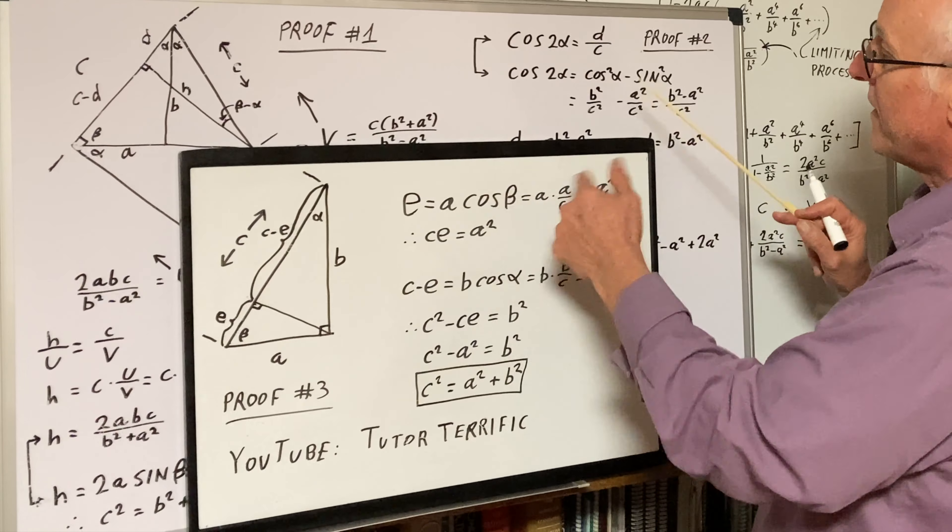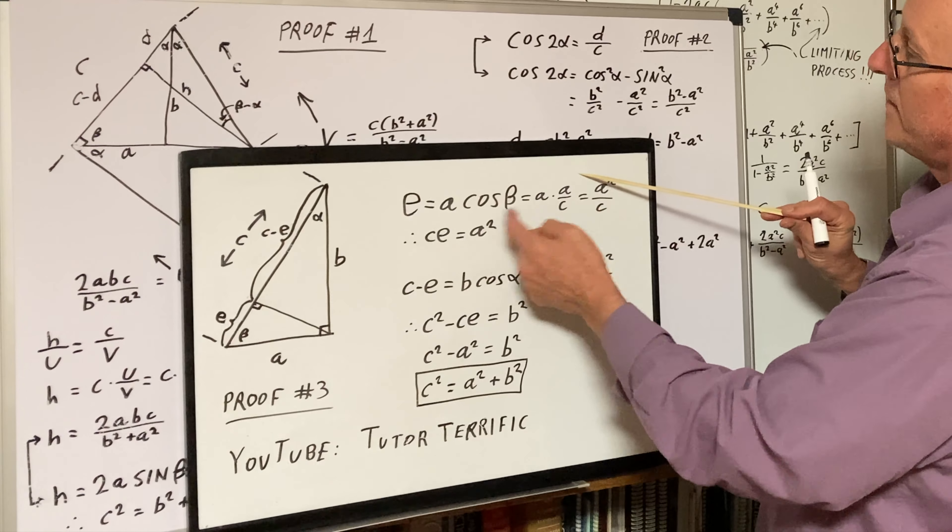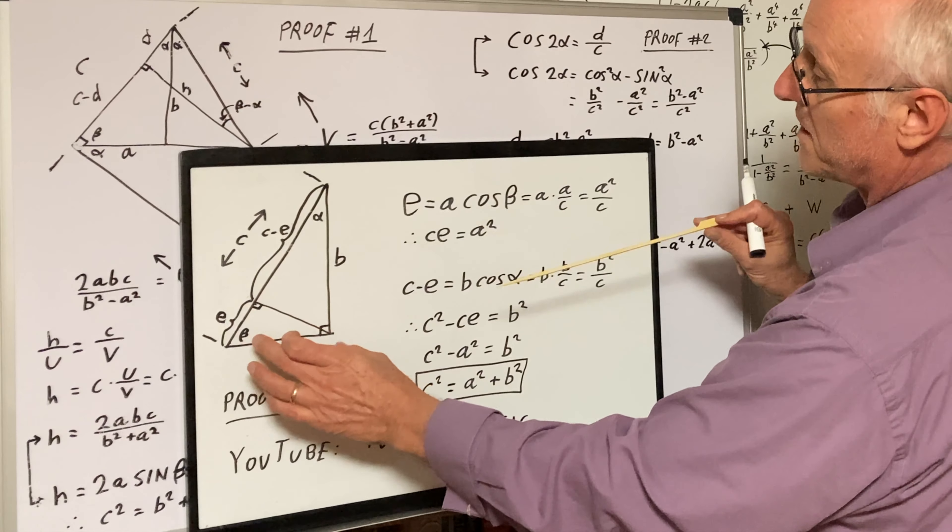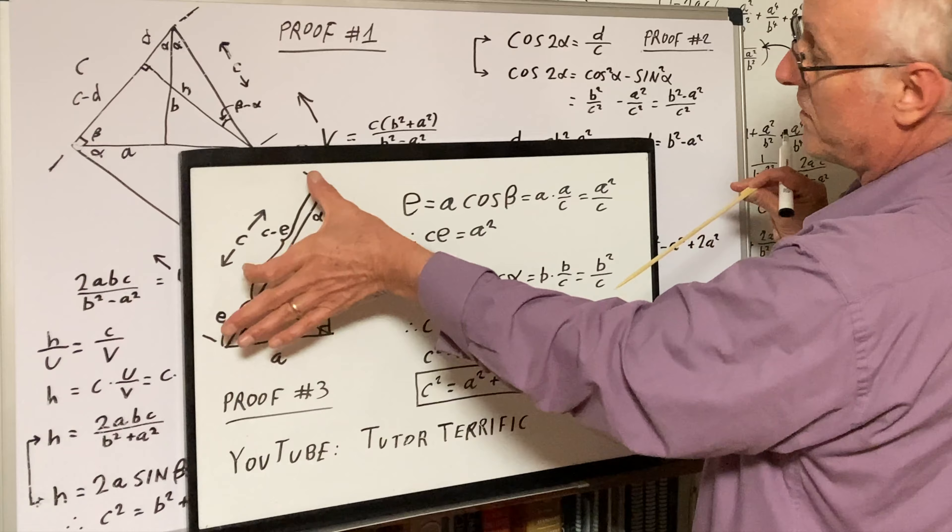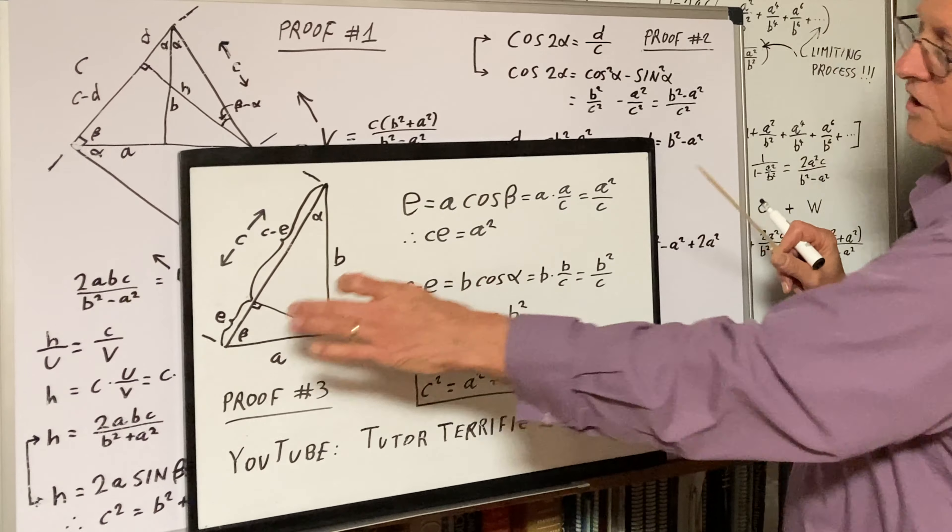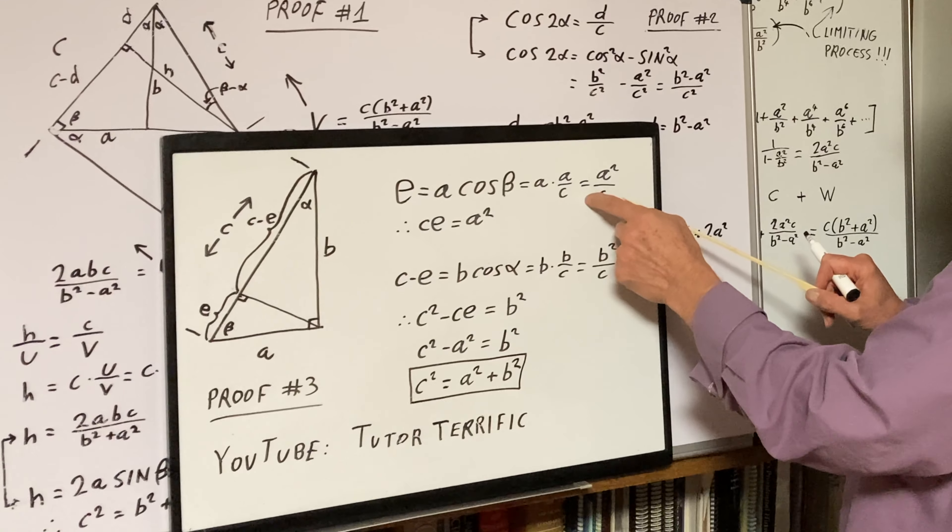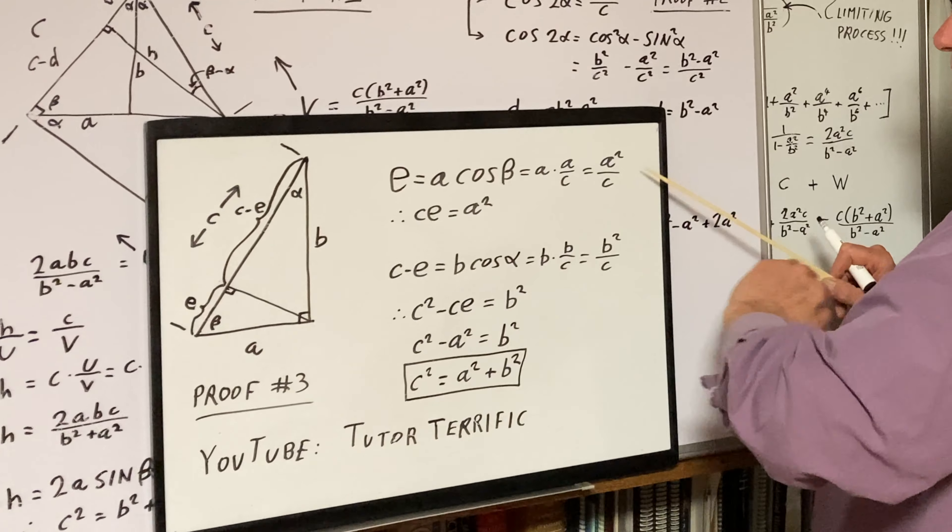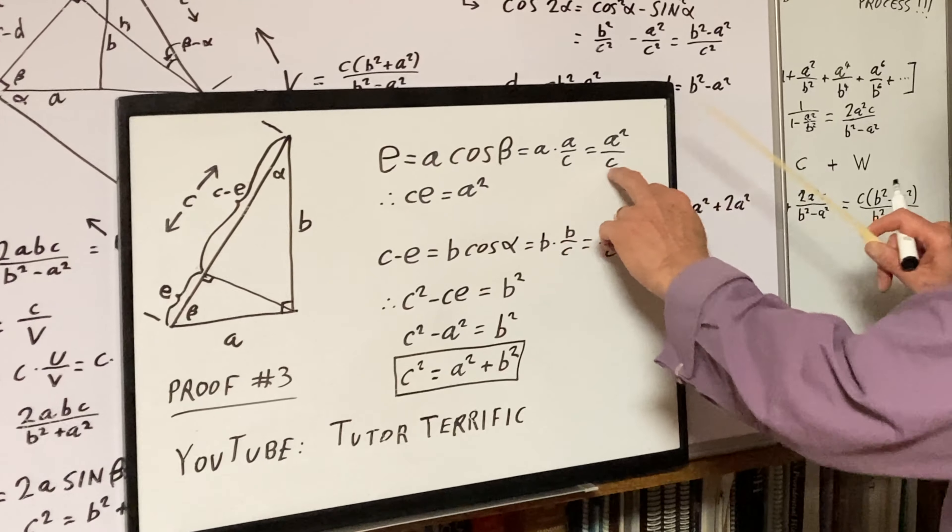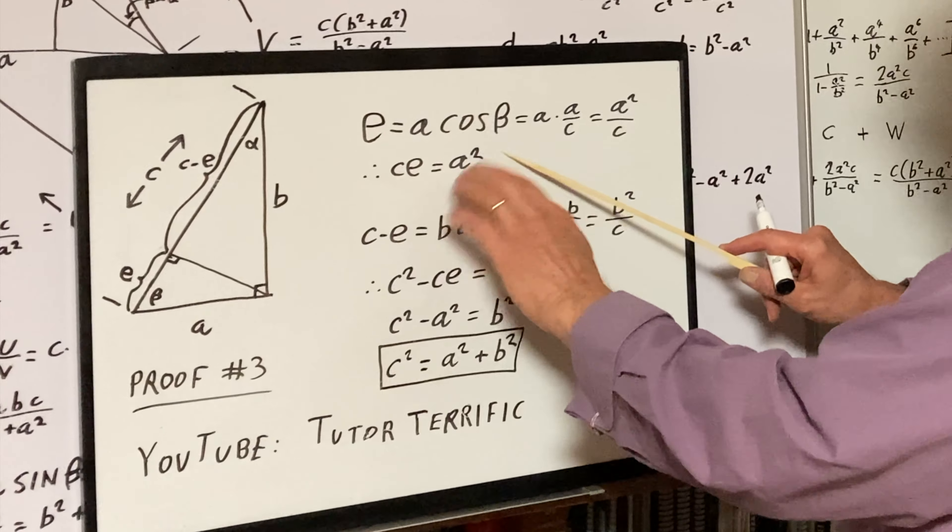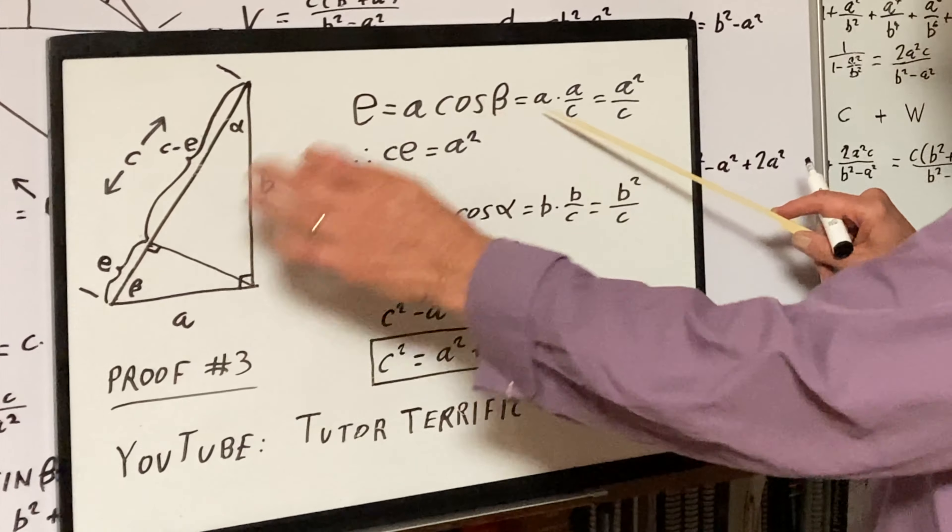When you crank that through, this equals A times A over C because cosine of B is also A over C, adjacent over hypotenuse. So it's A squared over C. Crank through, eliminate the denominator. CE equals A squared. Nice.